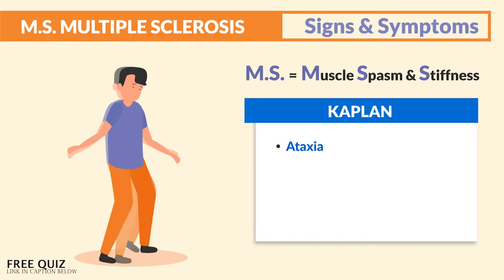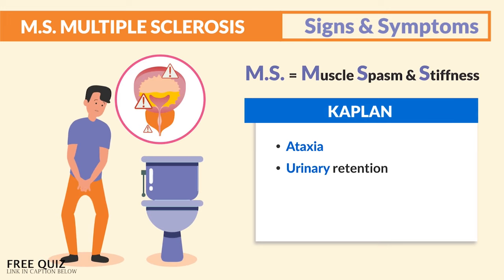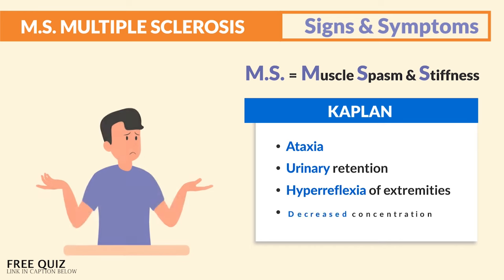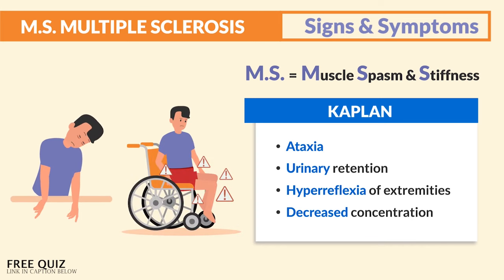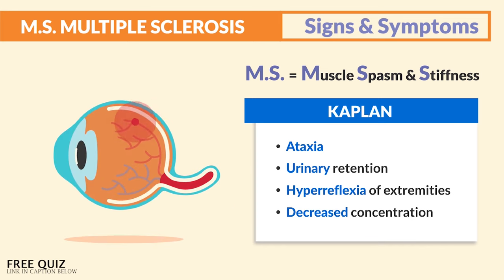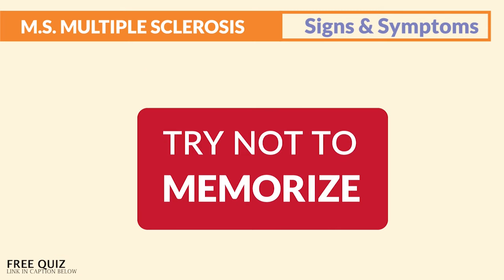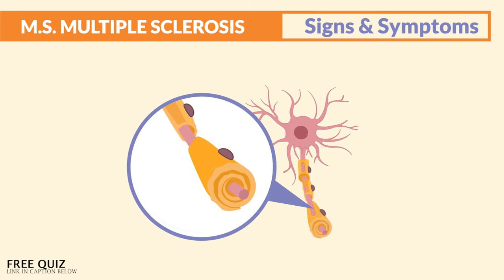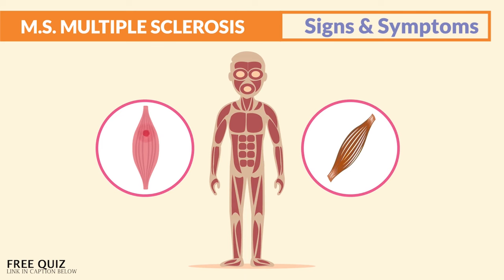Ataxia or uncoordination and balance impairment, urinary retention, hyperreflexia of the extremities, decreased concentration, fatigue, paralysis, and even eye and vision problems like double vision, blurry or dark spots. Try not to memorize all these symptoms — just think of the patho: myelin sheath destruction leading to M.S., those muscle spasms and muscle weakness all over the body.